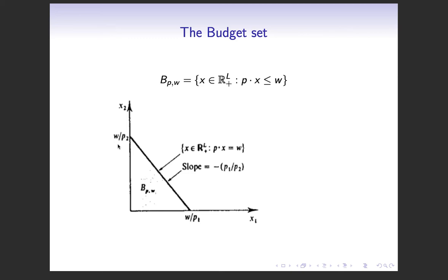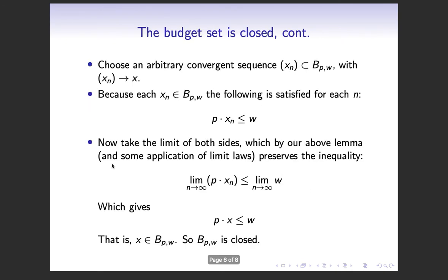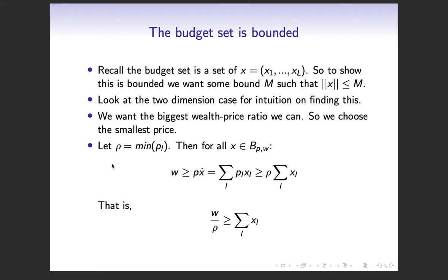So we want to take the smallest P value, so we can get the biggest ratio here. In this case, it looks like this is bigger, which would mean that P2 is less than P1. We make the denominator smaller to make the whole thing bigger. So that's what we're going to do for this. So we want the biggest wealth price ratio we can, so we choose the smallest price, that's what we just went over.